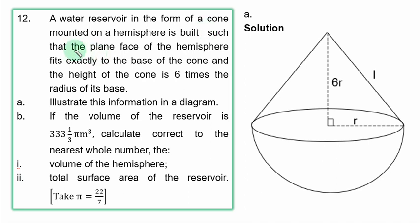Question 12. A water reservoir in the form of a cone mounted on a hemisphere is built such that the plain face of the hemisphere fits exactly to the base of the cone, and the height of the cone is 6 times the radius of its base.